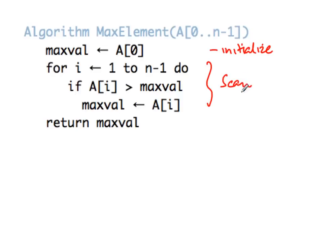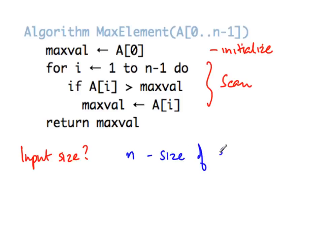To analyze this algorithm, we have to figure out how many steps it will take as a function of the input. The first question is: what is the input size? In this case, it is fairly natural that it is n, the size of the array. It will take less time for smaller arrays and larger time for longer arrays, so n is a natural input size.